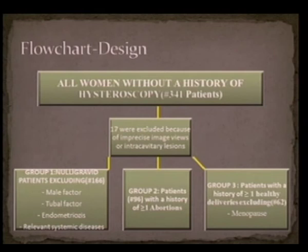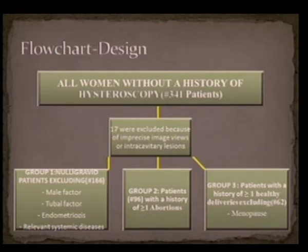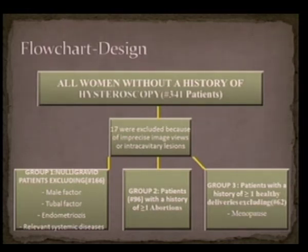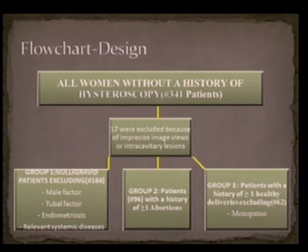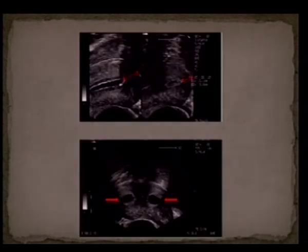This is the flowchart of our study. We included all women without a history of hysteroscopy — total number was 341. Seventeen were excluded because of imprecise image views or intracavitary lesions. Patients were divided into three groups. Group one: ladies without any pregnancy, excluding male factor, tubal factor, endometriosis, or relevant systemic diseases. Group two: patients with at least one abortion. Group three: women with spontaneous pregnancies with healthy deliveries, excluding the menopausal.